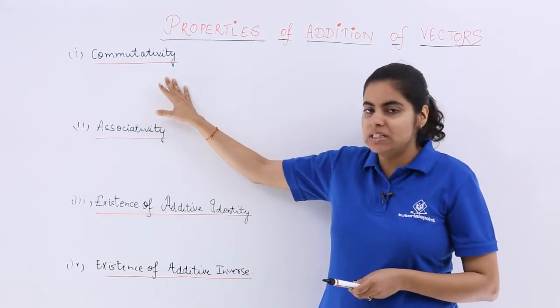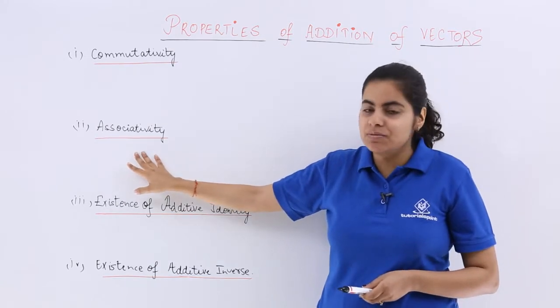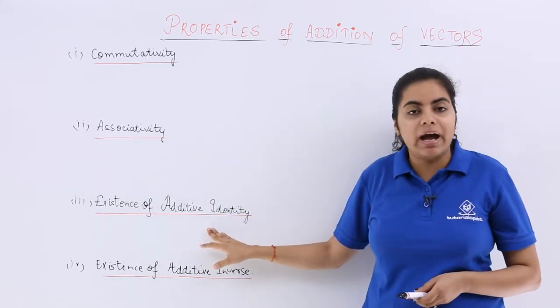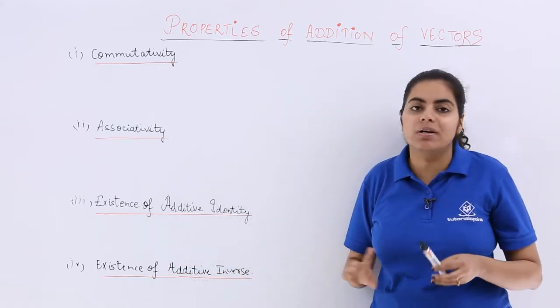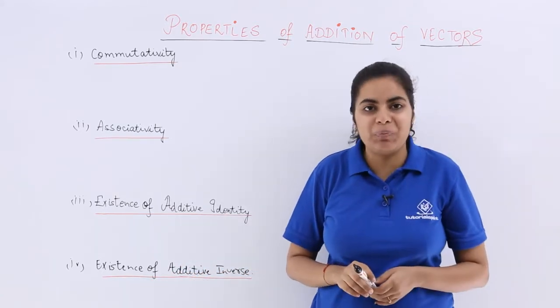The first being commutativity, the second being associativity, the third being existence of additive identity, the fourth being existence of additive inverse. So these are the four main properties.